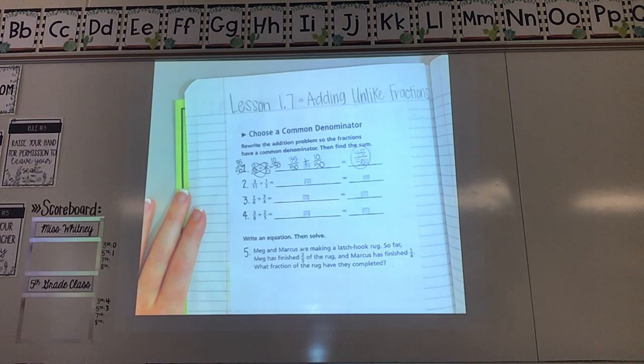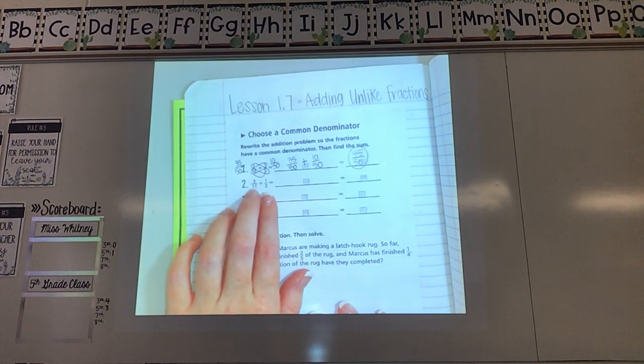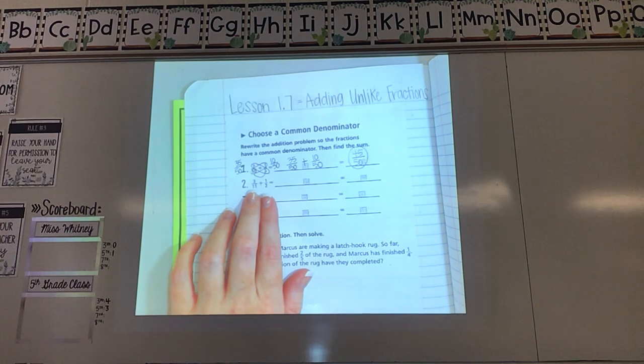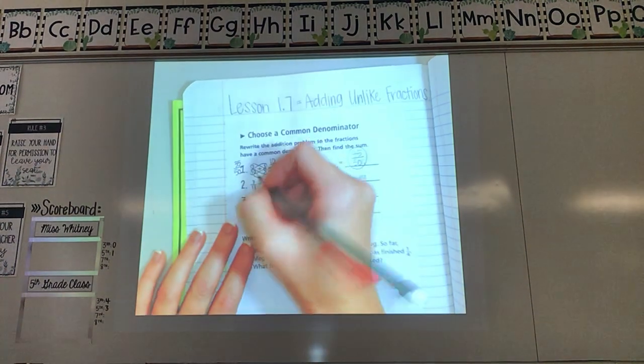Let's try another one. Three elevenths plus one half. First, I'm looking at my bottom numbers. Are they the same? No. So my first step to fix them is to cross multiply.